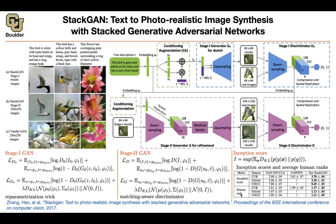Alternatively, you can show those images to human beings and they will rank them. For ranking, the lower is better — this one is 1.89, this one is 1.11. Any questions about StackGAN? Okay, perfect.